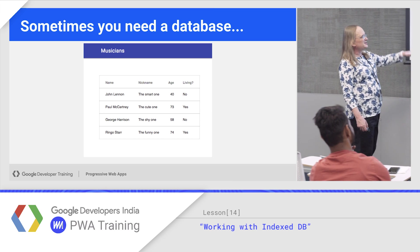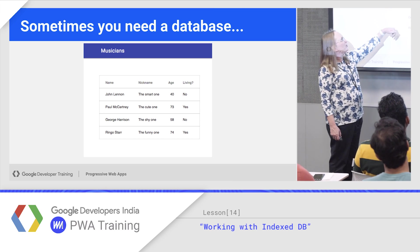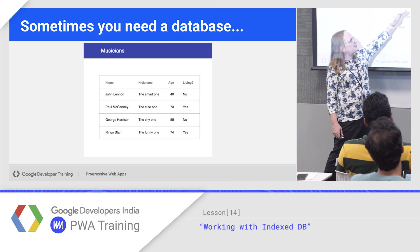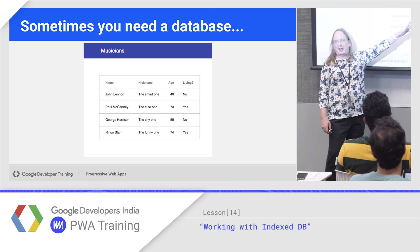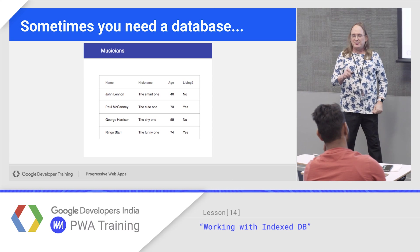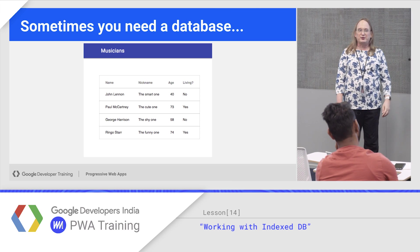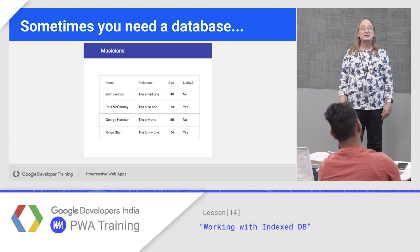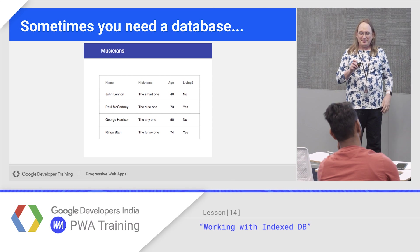Here's a quick example from one of the Google samples — the four Beatles. So name, nickname, age, and whether or not they're alive. It's a table and you could sort it based on the different attributes, the different columns on the table.